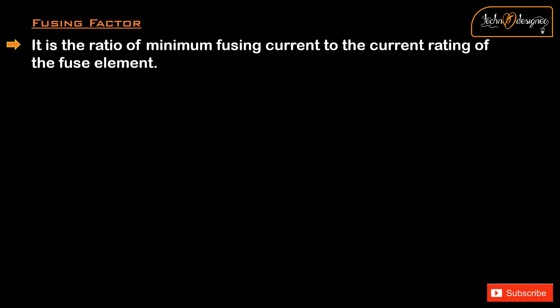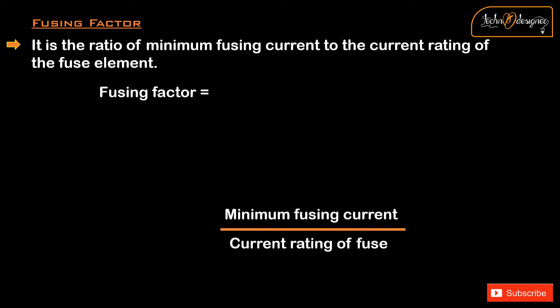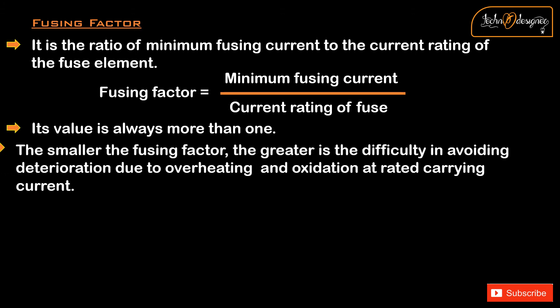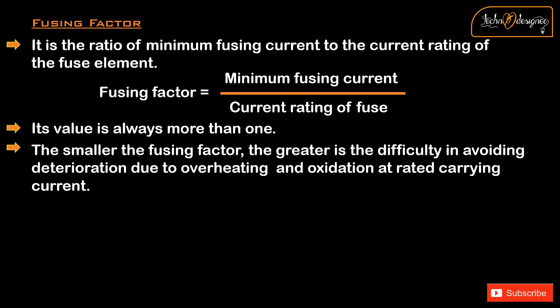Fusing Factor: it is the ratio of minimum fusing current to the current rating of the fuse element. Fusing Factor = Minimum Fusing Current / Current Rating of Fuse. Its value is always more than 1. The smaller the fusing factor, the greater is the difficulty in avoiding deterioration due to overheating and oxidation at rated carrying current.